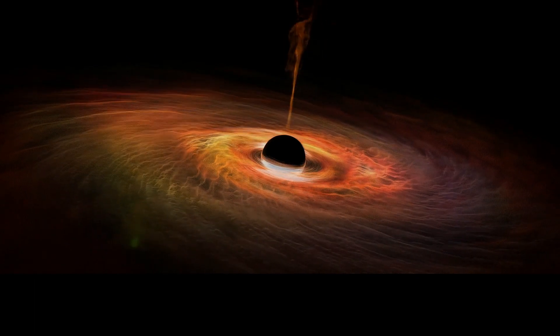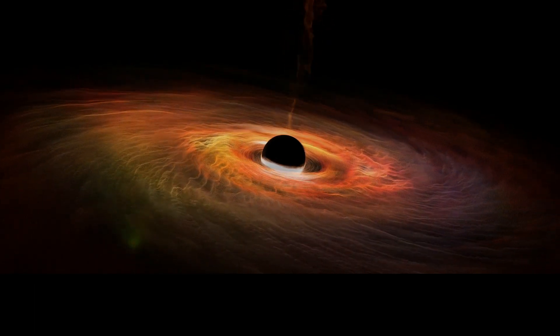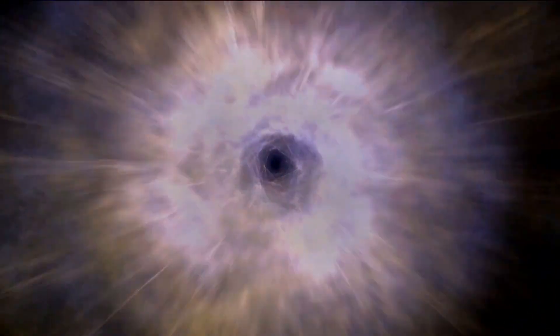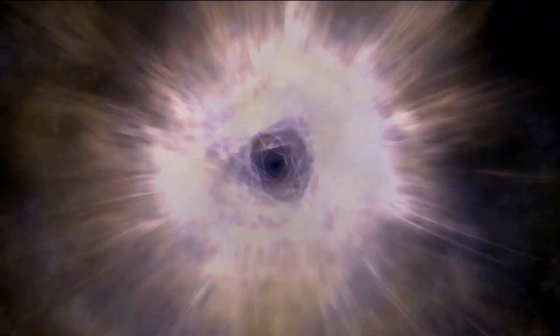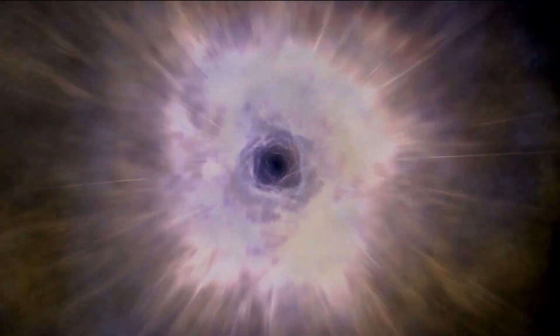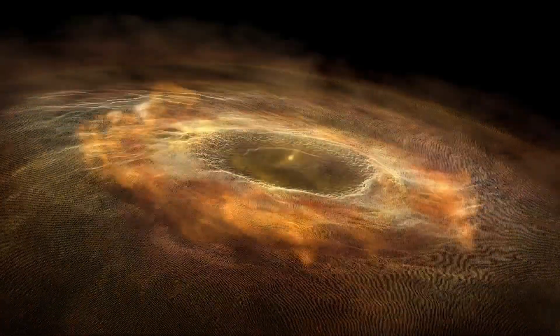According to some scientists, it may also be possible our universe is at the other end of a black hole called a white hole. A white hole has properties just opposite to that of the black hole. In general relativity, a white hole is a hypothetical region of space-time which cannot be entered from the outside, although matter and light can escape from it.